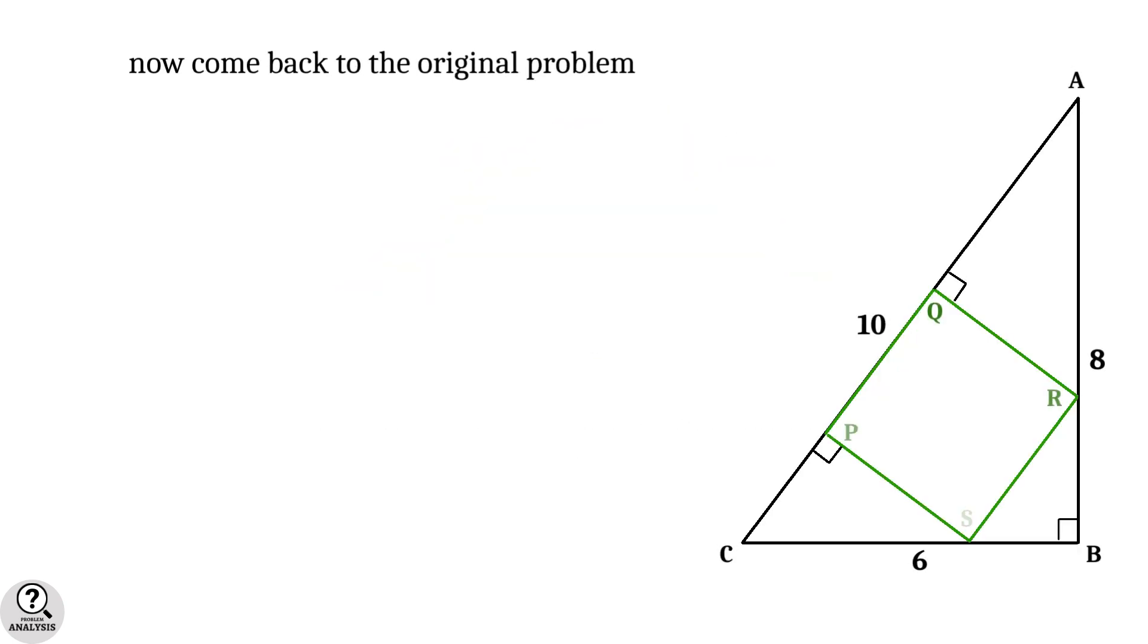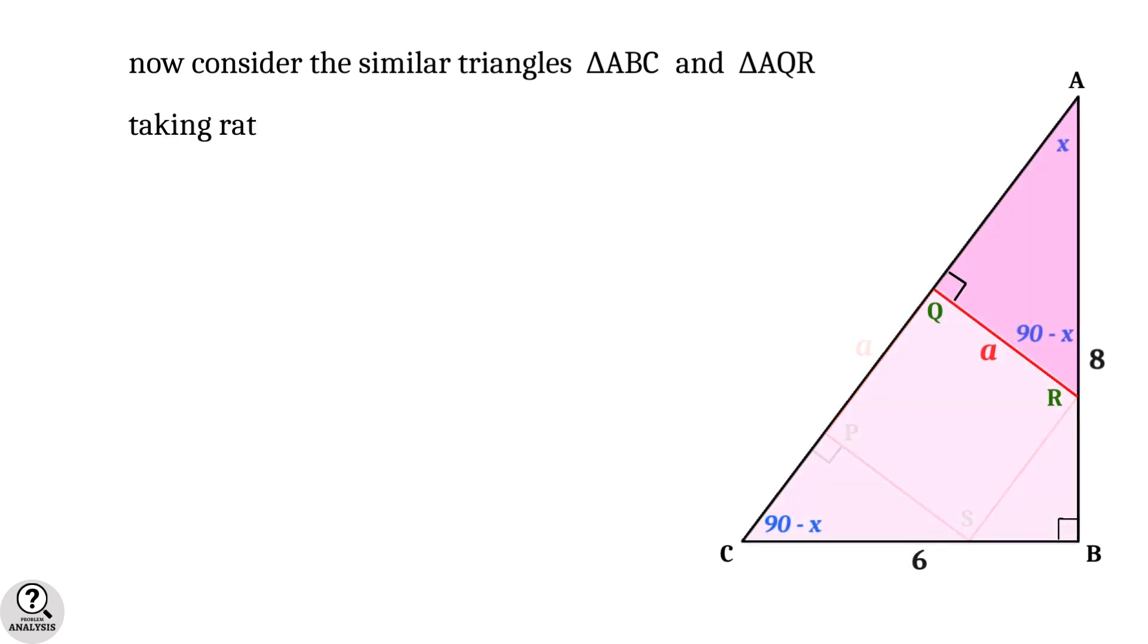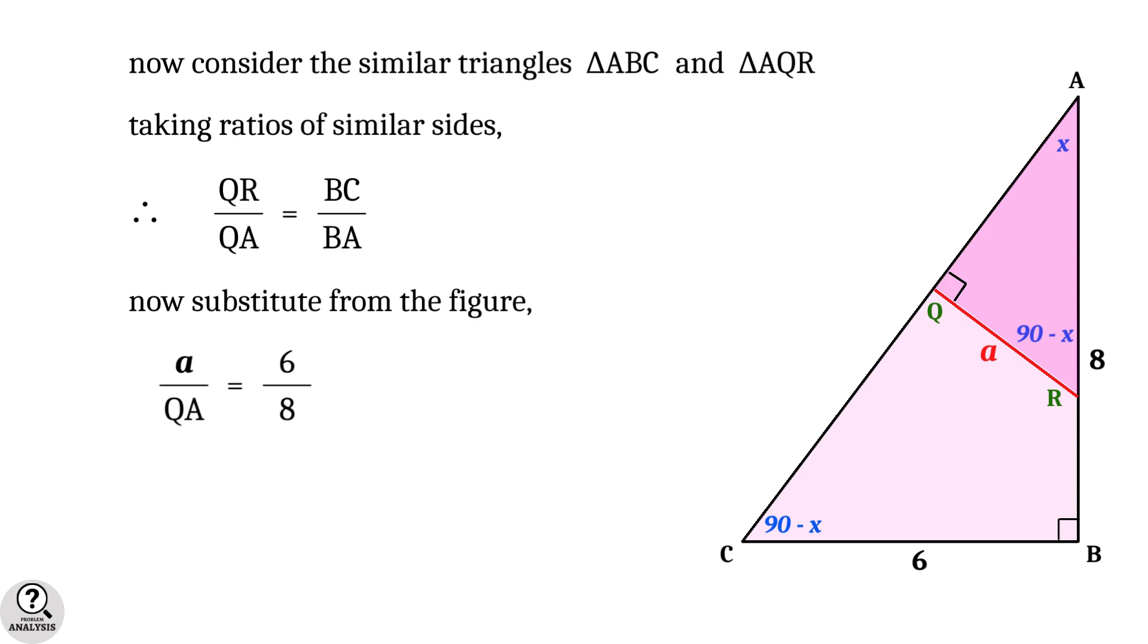Now come back to the original problem. Let's denote the square as PQRS and take the side length of the square as a units. Now consider the similar triangles: triangle ABC and triangle AQR. Taking the ratios of similar sides, we get QR by QA equal to BC by BA. Substitute the values from the figure: a by QA equal to 6 by 8, which implies QA equal to 4a by 3.